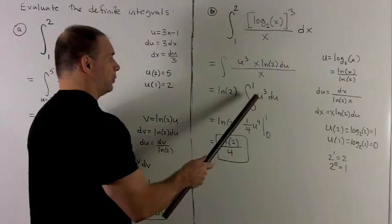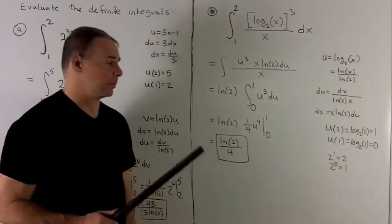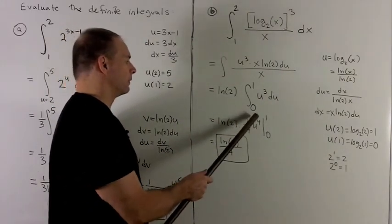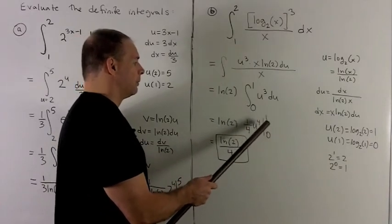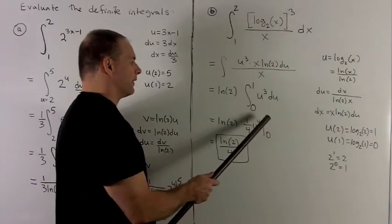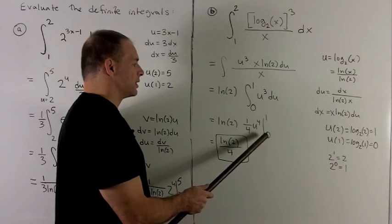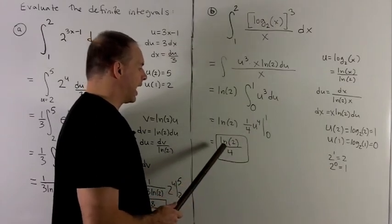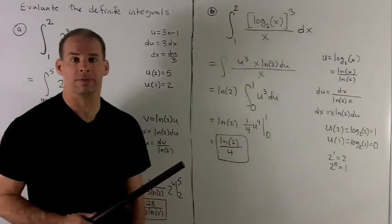Okay, u cubed du, any derivative of that, add 1 and flip it over. So we have 1 4th, u to the 4th, going from 0 to 1. So we evaluate at both of those points, take the difference. That gives me a 1 4th, and so we're looking at natural log of 2 over 4.